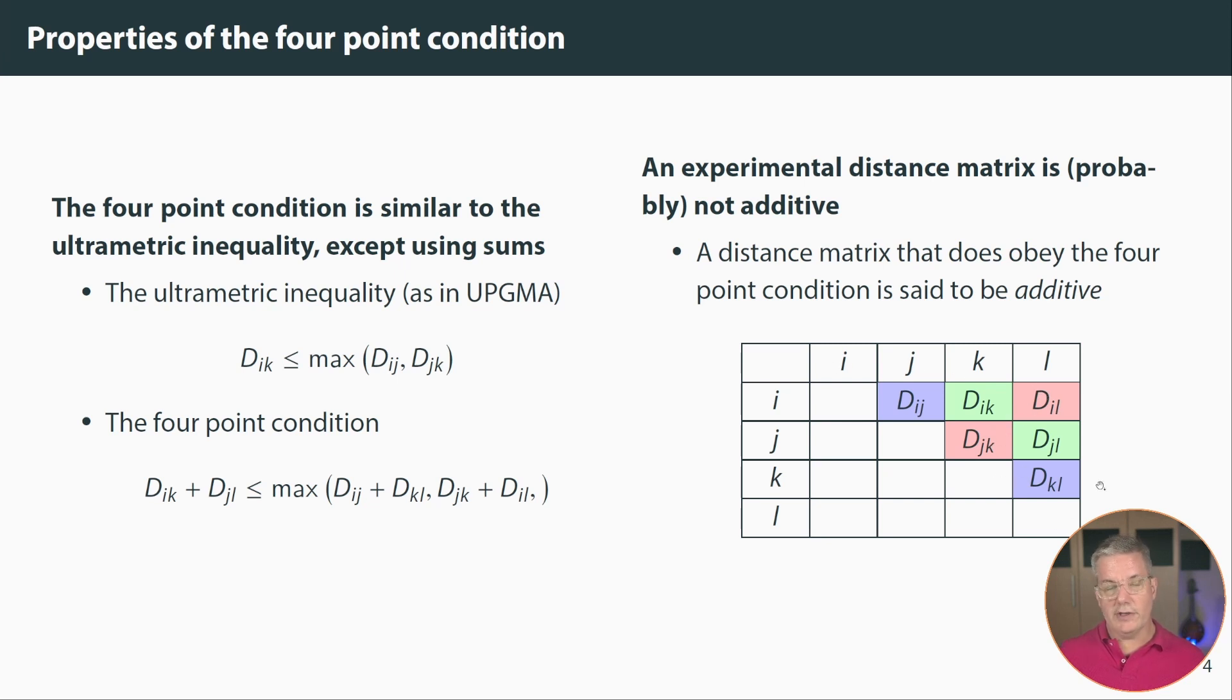So if we look in a distance matrix we can see each of the components of each of the sum values is in a different color so the red the green and the blue. So in this case the sum distances that are red are less than or equal to the max of either the sum greens or the sum blues. The summed blues are less than or equal to the max of the sum greens and the sum reds and so on.